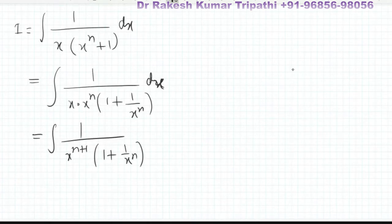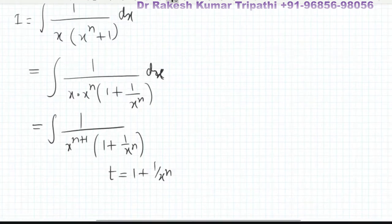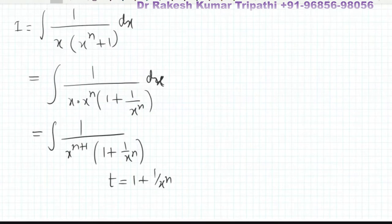Now we shall substitute t = 1 + 1/xⁿ, because its derivative is lying nearby. On differentiating 1 + 1/xⁿ, we can write it as 1 + x to the power minus n.